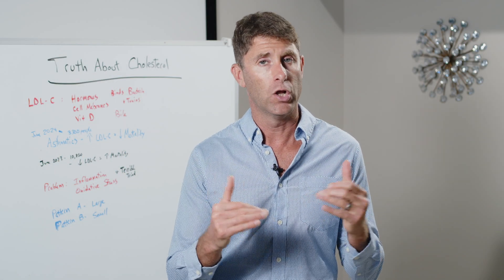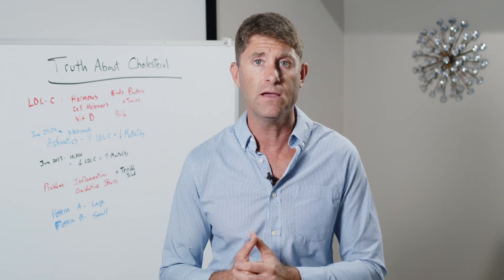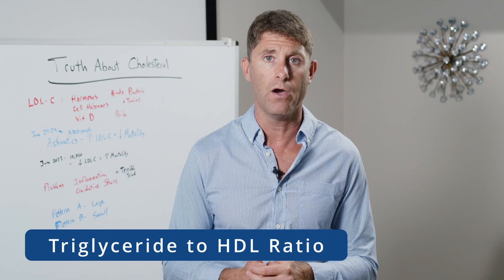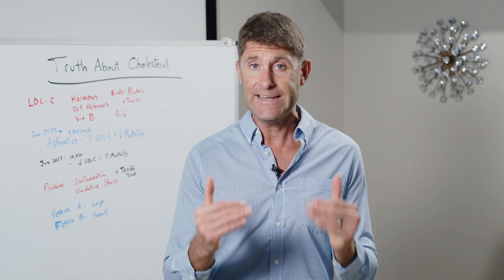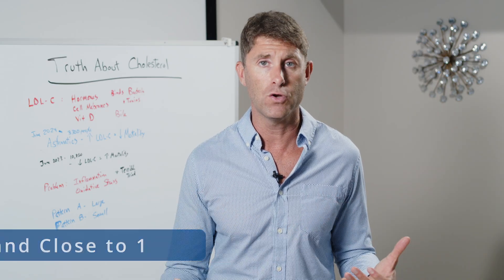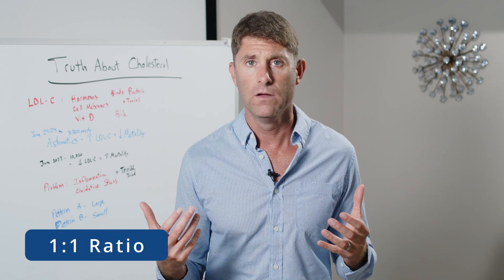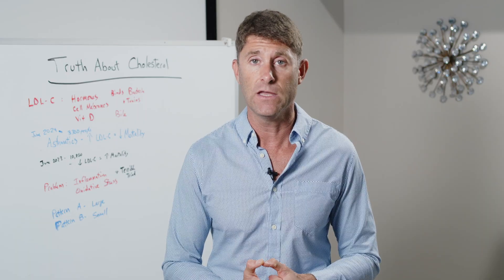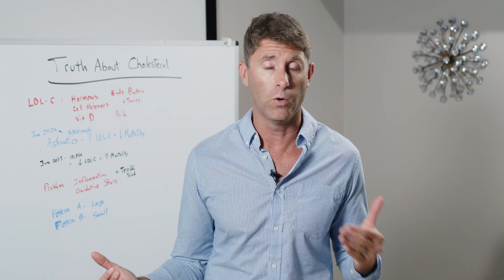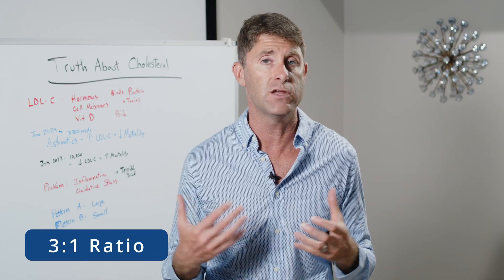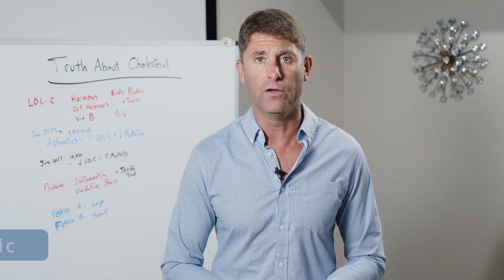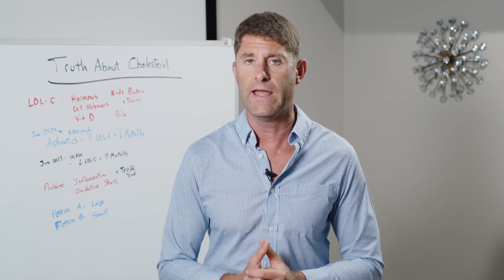One way you can know if you have large, fluffy LDL particles — pattern A versus pattern B — is by looking at your triglyceride to HDL ratio. That ratio should always be under two and ideally close to one. So if your triglycerides are 90 and your HDL is 45, that would be a two-to-one ratio. Ideally you want that under two and close to one — so if your triglycerides were 70 and your HDL was 70, that's a one-to-one ratio, a sign that you have pattern A large fluffy LDL particles. If your levels were 150 triglycerides and 50 HDL, that's a three-to-one ratio — a sign you have pattern B, the atherosclerotic type of LDL particles. So look at your triglycerides, look at your HDL, find that ratio.